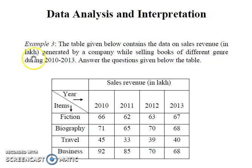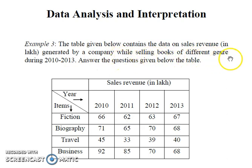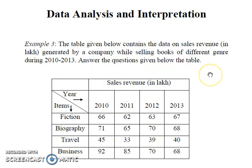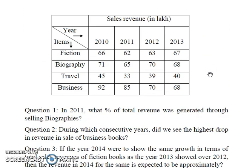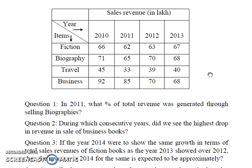In this example, a table is given which contains data on sales revenue generated by a company while selling books of different genres during 2010 to 2013. Based on the given data, we need to answer the questions asked below. So let's do the first question.